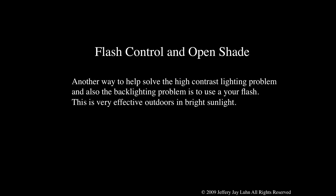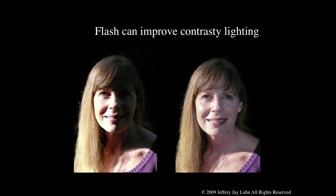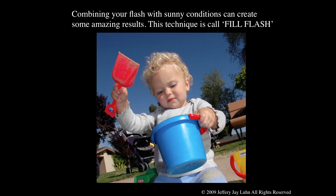Next we're going to do the flash control and open shade. We're going to solve the high contrast lighting problem and also the backlighting problem with the use of your camera flash — it's a very effective tool to use outdoors in bright sunlight. A picture of my wife on the left shows the highlight side of her face is really burned up and the shadow side is too dark. I use my pop-up flash, take the same picture, and it adds light to the shadow side of her face. In her eyes there's a highlight right where her pupil is — that's the camera flash. Combining your flash with sunny conditions is called fill flash, where the flash is used as a secondary source, not a primary source.